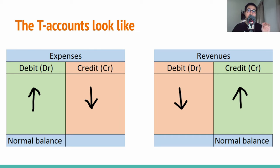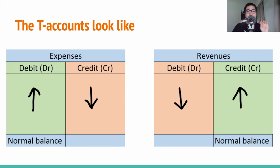Moving on to two differences. The first one is that the increasing and decreasing of the debit and credits in the expense account is contrary to the revenues account. The final difference is that the normal balance in the expense and revenues account is contrasting.